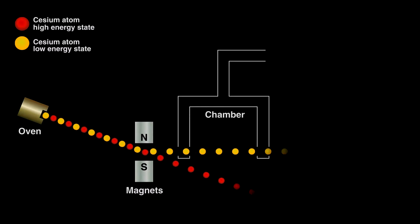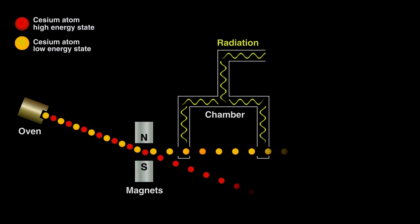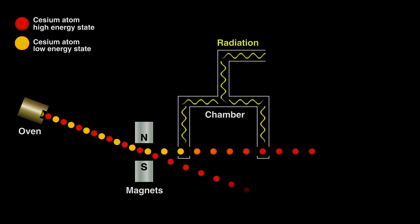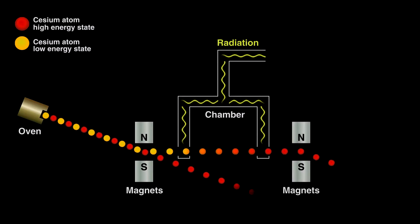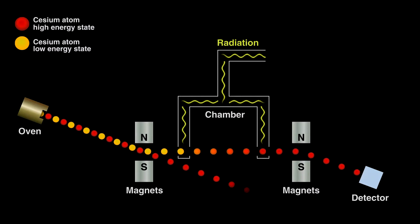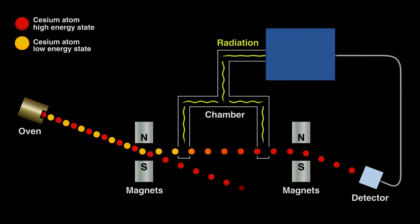Inside the chamber we bombard the ions with just the right wavelength radiation to make them jump to higher energy. As these gaseous ions leave the chamber, they pass through another magnet that directs high energy ions toward a detector, this time discarding any lower energy ones. The detector converts the arriving ions to a current.